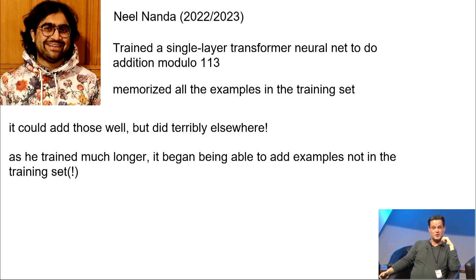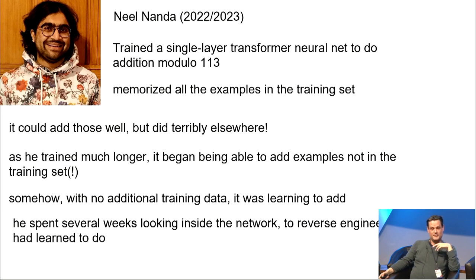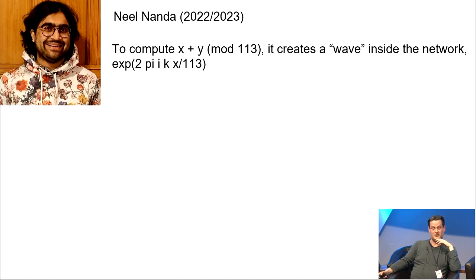And he spent several weeks looking at the weights inside the neural network to reverse engineer what it had learned to do. And he found, basically, to his own surprise, a bunch of trigonometry, and he says, this algorithm was purely learned by gradient descent. I did not predict or understand this algorithm in advance and did nothing to encourage the model to learn this way of doing modular addition. I only discovered it by reverse engineering the weights. And what it actually does, what that trig amounts to, is it creates a wave inside the network with the frequency given by the number x that you're trying to add.